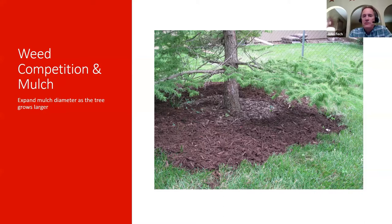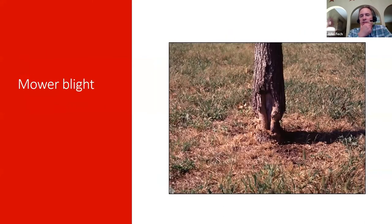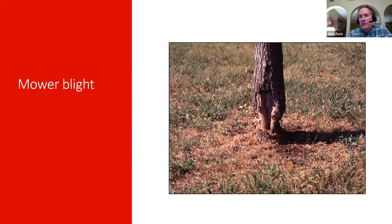If you don't mulch, this is what can happen — injury from a string trimmer or lawn mower, sometimes called mower blight. When string trimmers were introduced in the seventies, commercials actually showed trimming around trees, until manufacturers were informed this isn't a good idea. The injury can look similar to vole or mouse damage in winter. Mulching thin and wide helps prevent any kind of damage from mowing equipment.